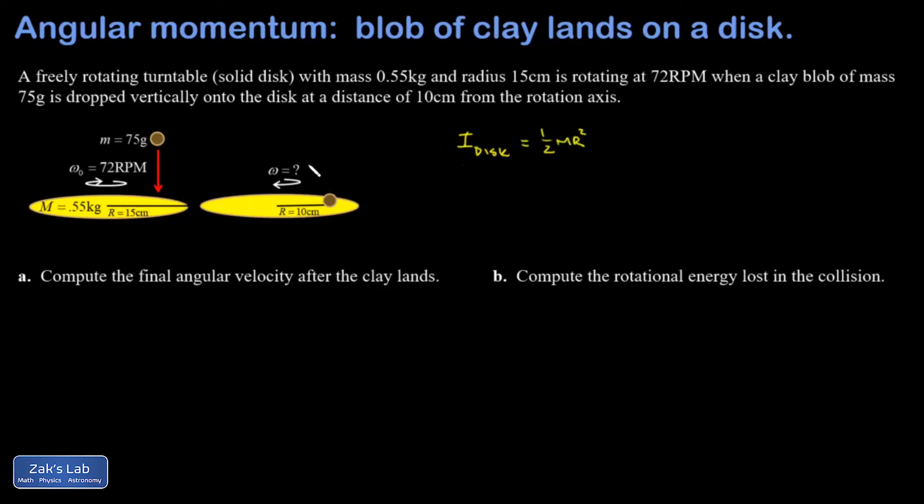And then my blob of clay is going to land at a different radius. It's not landing on the edge of the disk, it's somewhere in between. So when I write down the moment of inertia for the point mass, I'm going to use a little different notation for the R just so I don't get them confused. And for a point mass, it's just mR squared. And I'm going to call the mass little m and the radius little r.